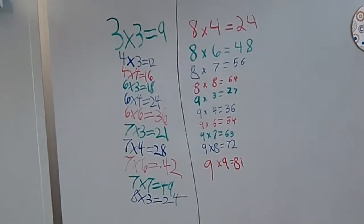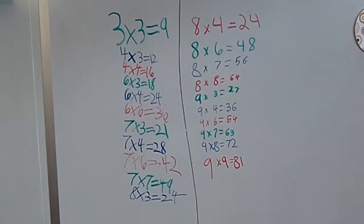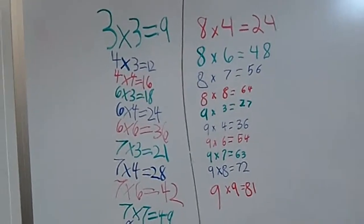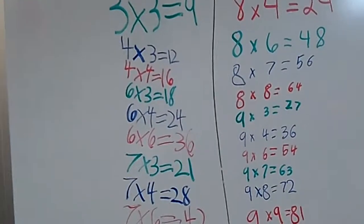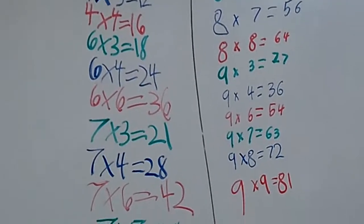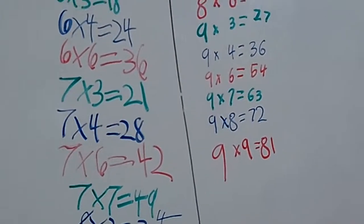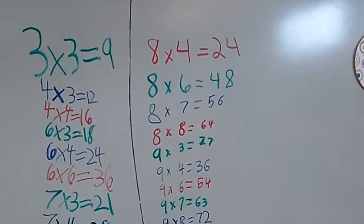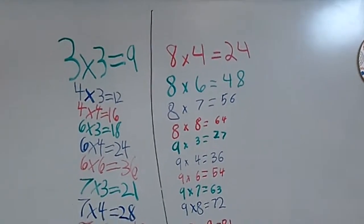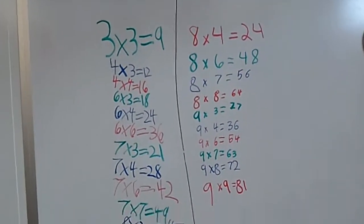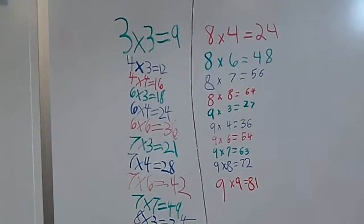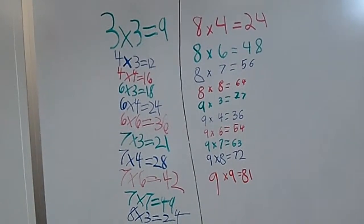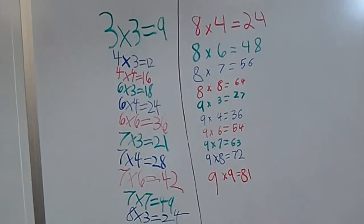Three times three, four times three, four times four, six times three, six times four, six times six, seven times three, seven times four, seven times six, seven times seven, eight times three, eight times four, eight times six, eight times seven, eight times eight, nine times three, nine times four, nine times six, nine times seven, nine times eight, and nine times five.